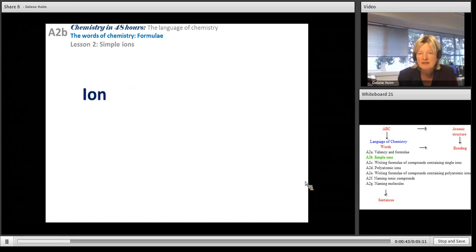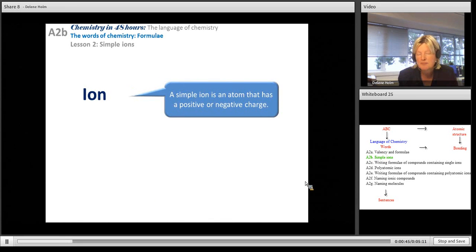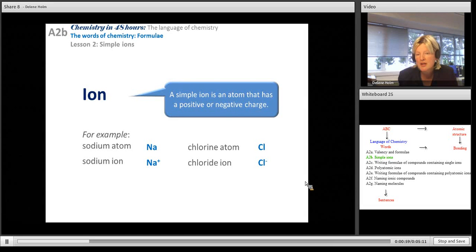So an ion is simply an atom that has a positive or negative charge. An atom is neutral and an ion is charged. For example, I've got a sodium atom and a sodium ion that's positively charged, or a chlorine atom and a chloride ion.